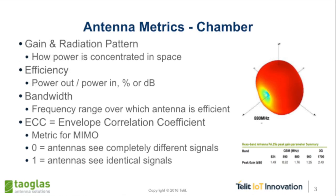So, metrics: gain and radiation patterns. We've got that nifty picture there for the radiation pattern. It's literally if you have an antenna and that antenna puts the energy you're transmitting — or the focus of its receiving capability — in a direction that's not useful for your application, well, that's bad. You want it to look in the right direction. Sometimes you can control that, sometimes you can't.